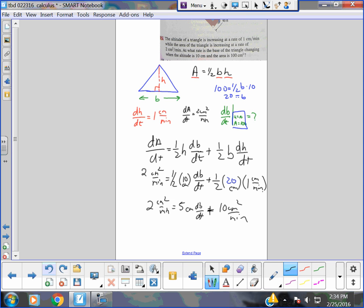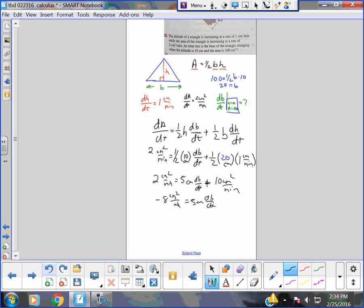Oh, look, we got like terms on our constants of 10 and the 2. You take it away, it's negative 8 centimeters squared per minute equals 5 centimeters db/dt divided by 5 centimeters. I think you get negative eight-fifths centimeters per minute equals db/dt.